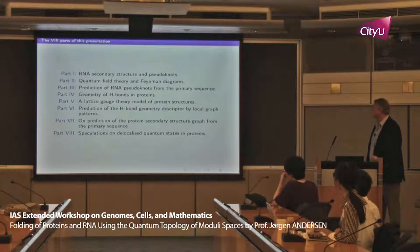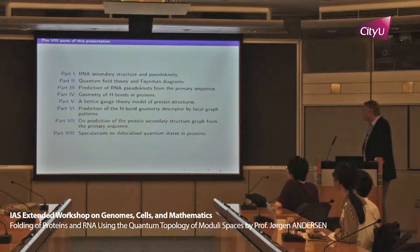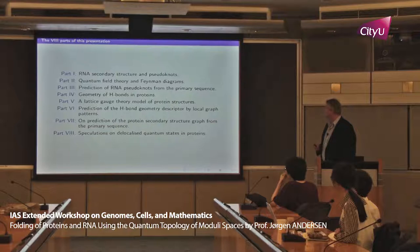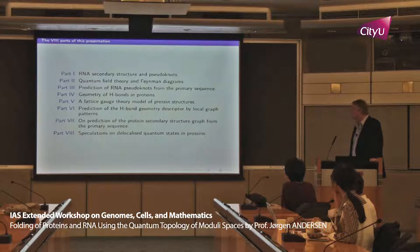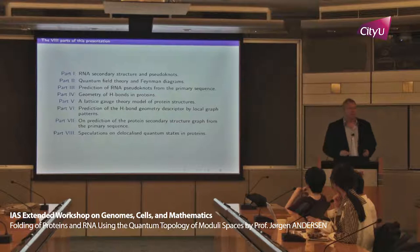The talk will have eight parts. I'll start with RNA secondary structures and pseudoknots, then deviate into quantum field theory and Feynman diagrams. I'll come back to prediction of RNA pseudoknots from primary sequence, then turn to proteins and talk about geometry of H bonds. That will inspire a lattice gauge theory model for proteins. I'll discuss predicting H bond geometry from local graph patterns, then predictions of protein secondary structure graphs from primary sequence, and finally a speculation on relations to quantum theory.